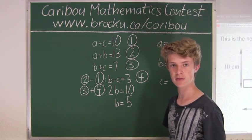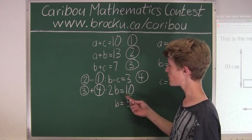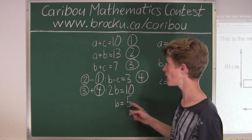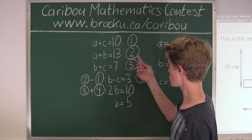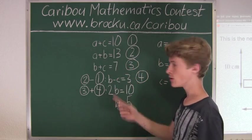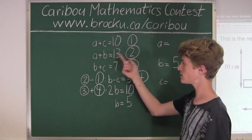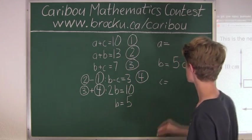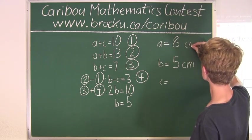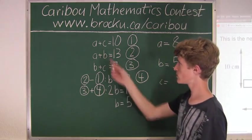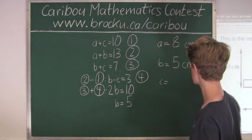Now we have achieved what we wanted to do. We have found out the value of one variable, so we can substitute B equals 5 into the other equations to get A and C. Let's do equation 2. We know A plus 5 equals 13, therefore A must equal 8. Now we will do the first equation. We have 8 plus C equals 10, so C must equal 2.